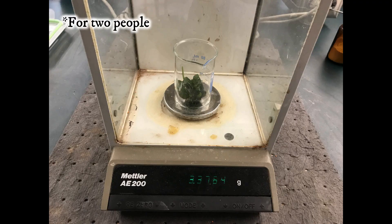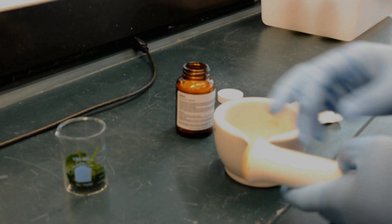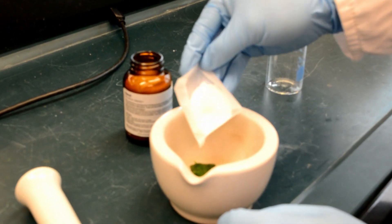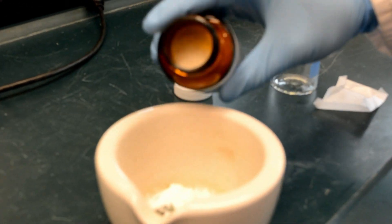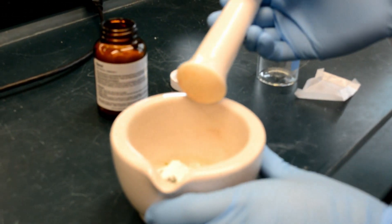Weigh about 3 grams of frozen spinach and 3 grams of magnesium sulfate. Add the spinach, magnesium sulfate, and a pinch of sand to the mortar and crush the mixture for about 5 minutes using the pestle.